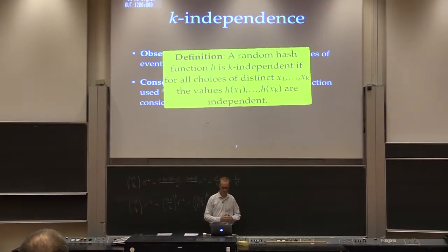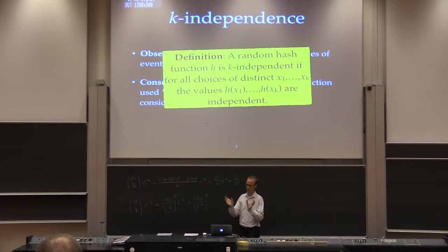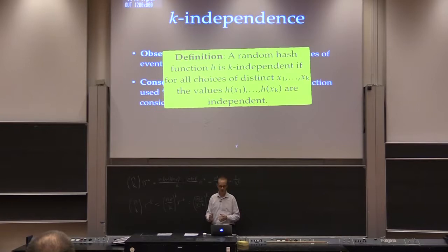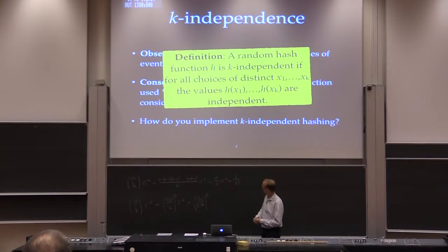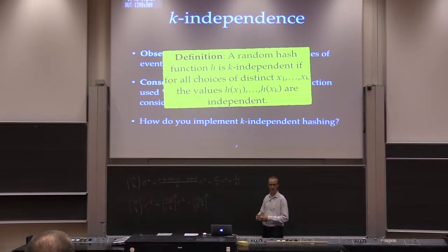A random hash function is k-independent if whenever you look at k inputs, the outputs are independent. Usually it's understood also that they are uniform or very close to uniform over some range. In particular, these two analyses I showed you work if we have k-independence. I wanted k-independence to be roughly logarithmic, so we are interested in implementing k-independence in general and, in particular, log-n-wise independence to get these kinds of results.